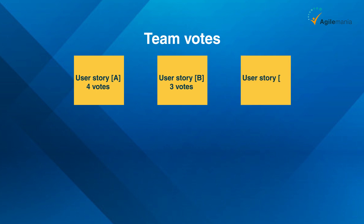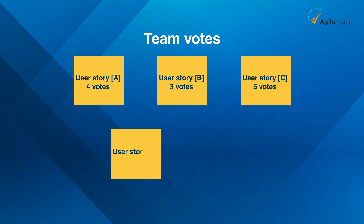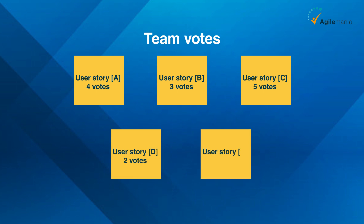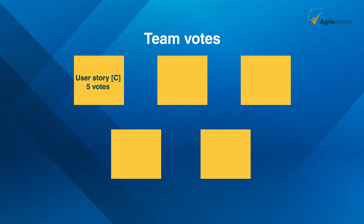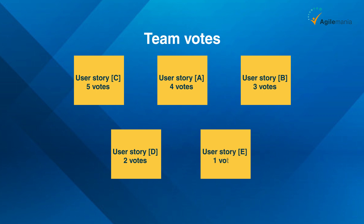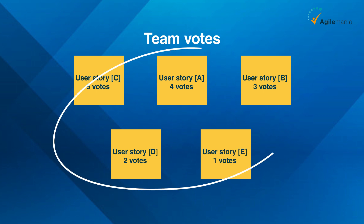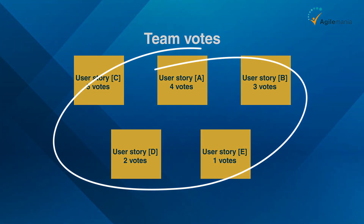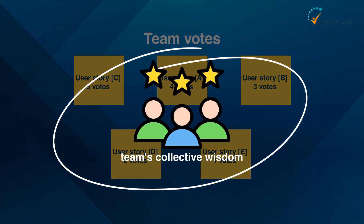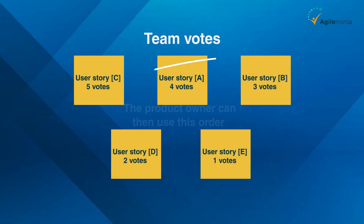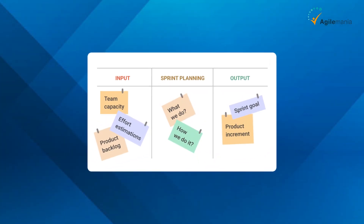In our example, let's say the team voted like this: user story C — five votes, user story A — four votes, user story B — three votes, user story D — two votes, user story E — one vote. The product owner then orders the stories in this sequence, which reflects the relative size and importance of each user story according to the team's collective wisdom.